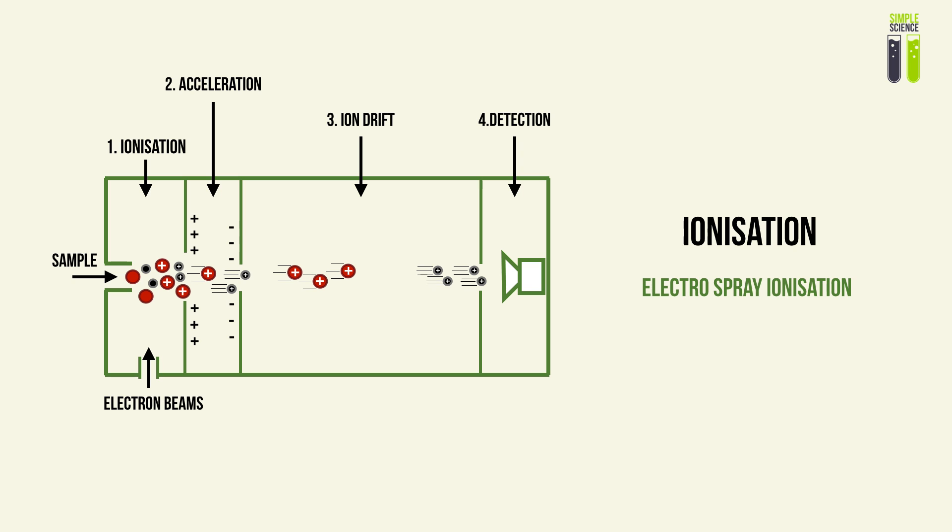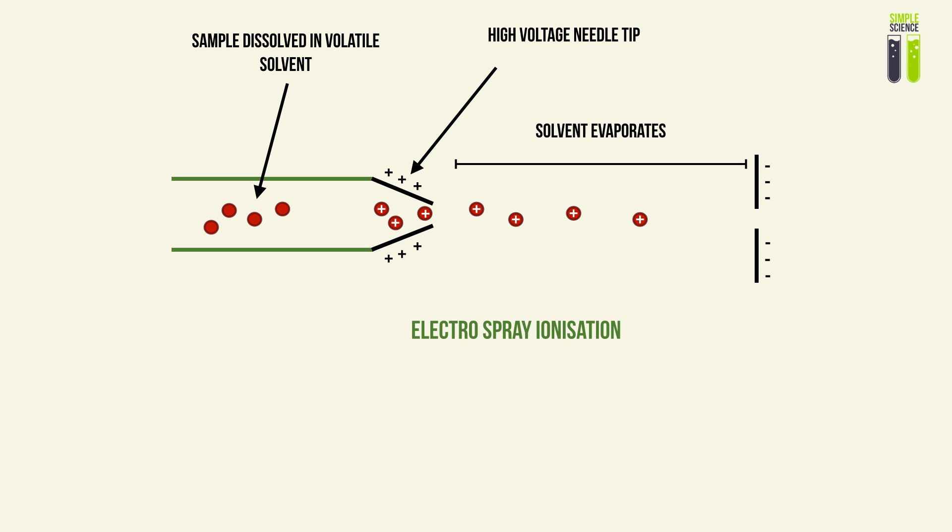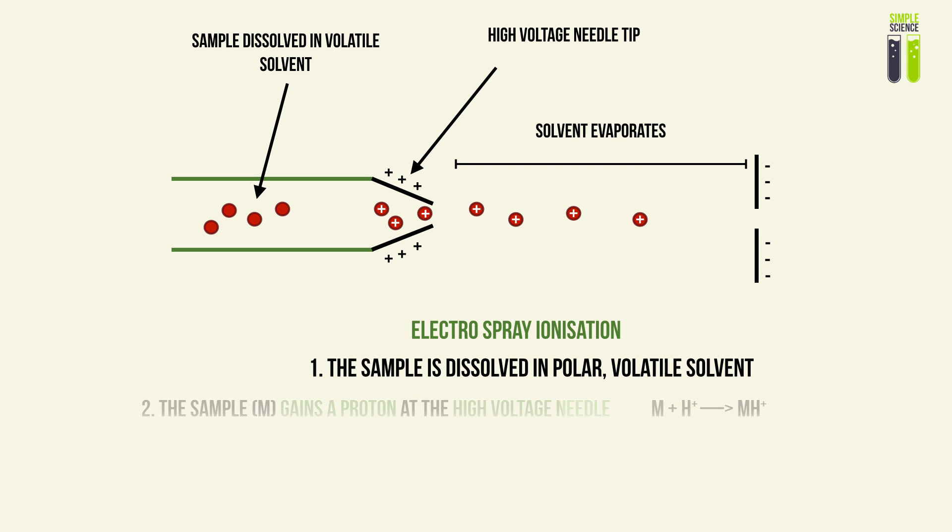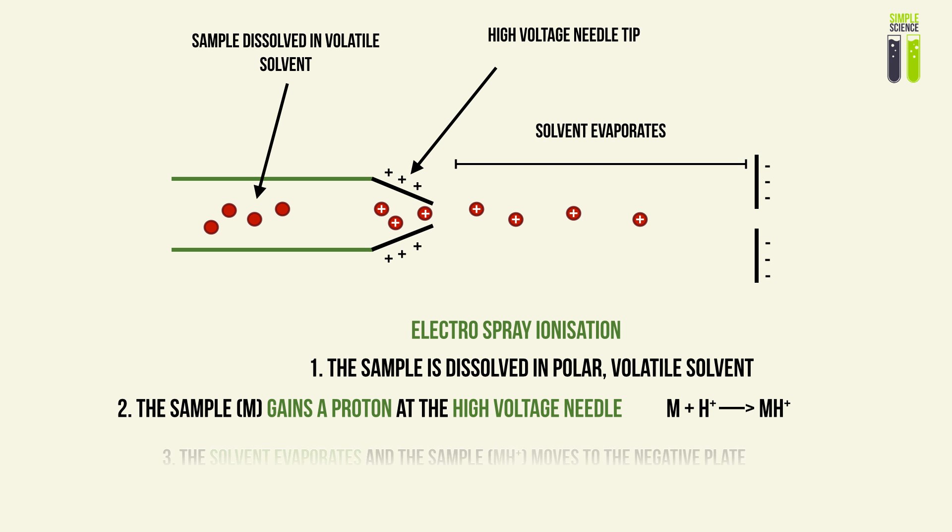The other way you can ionize your sample is through electrospray ionization. What this is: you first dissolve your isotopes in a volatile solvent, and then you inject this dissolved sample into your mass spectrometer, where it passes through a high-voltage needle. At this stage it will gain a proton. If I call my sample M, when it gains a proton the product I'll label as MH+, and it will have a positive charge. I'm going to keep it moving by moving it to a negative plate.